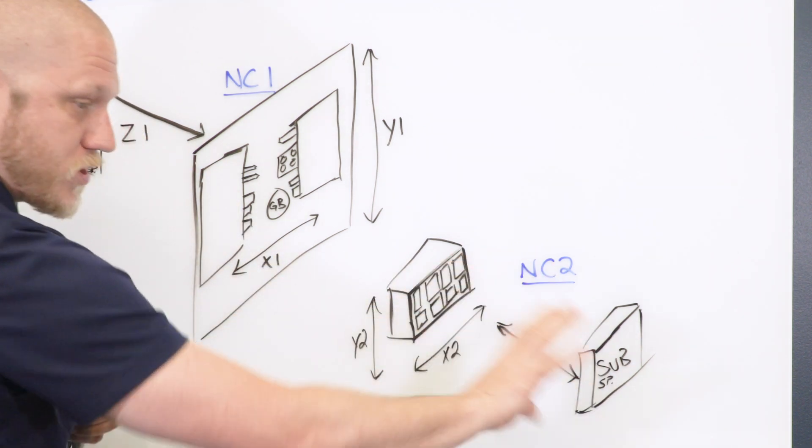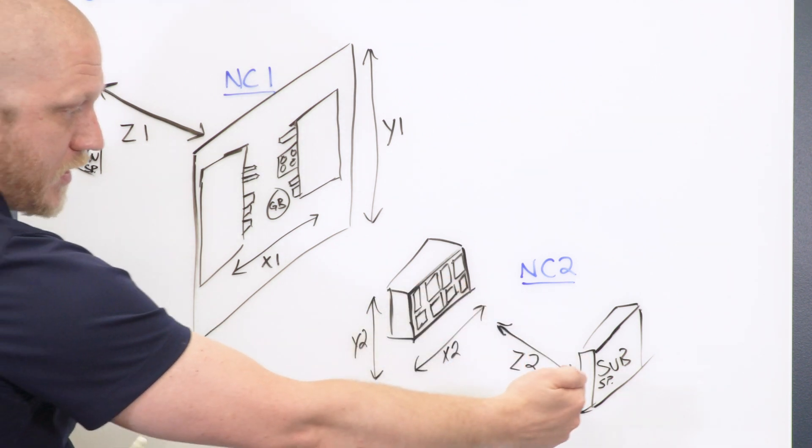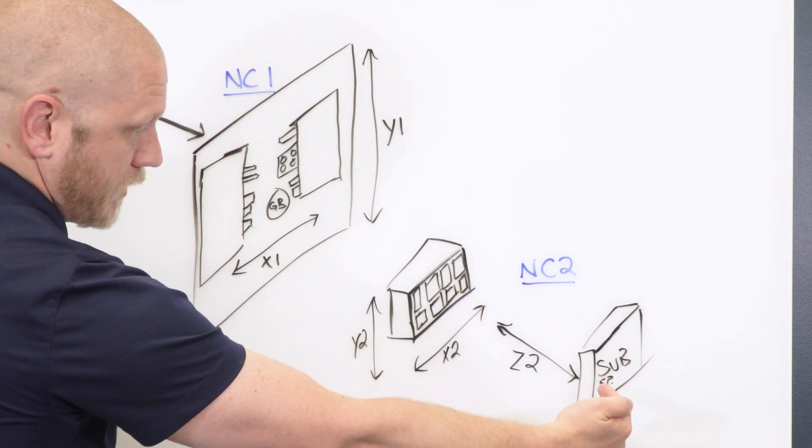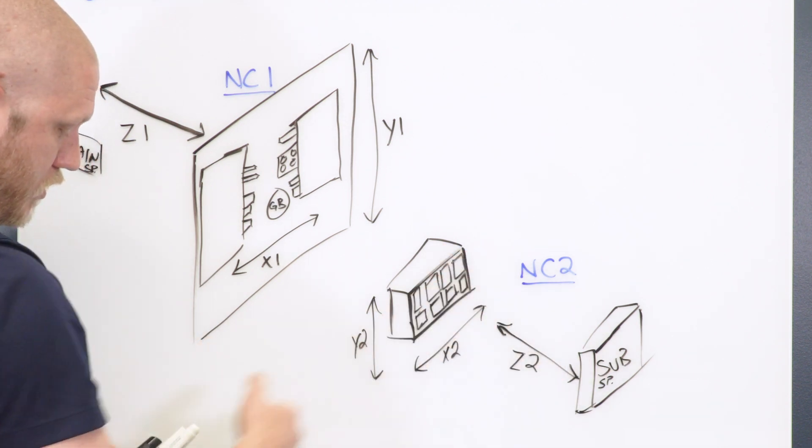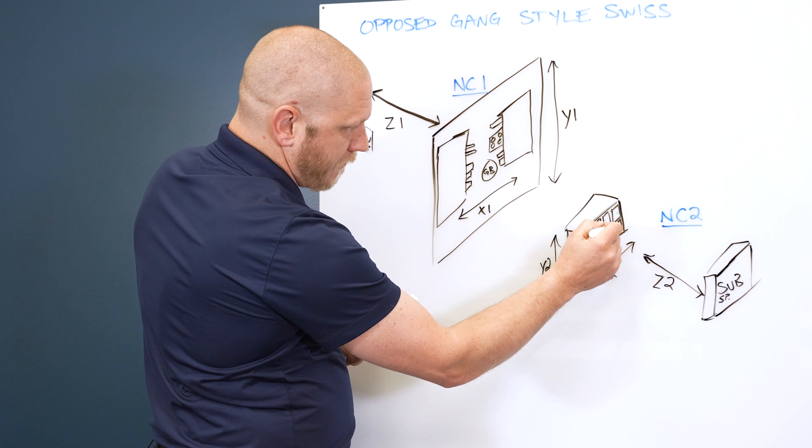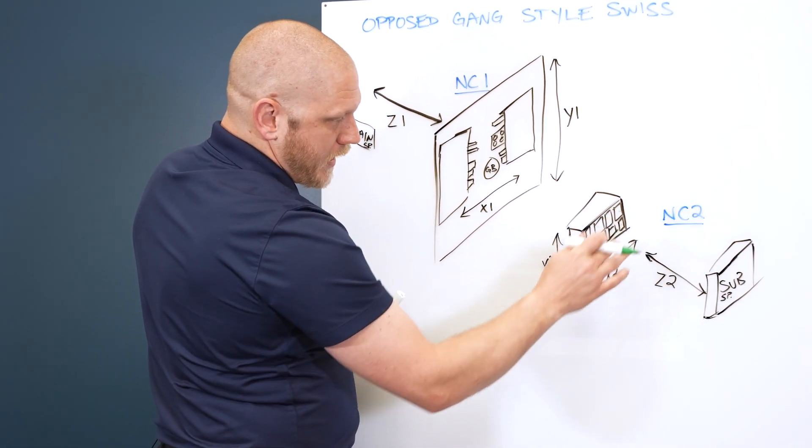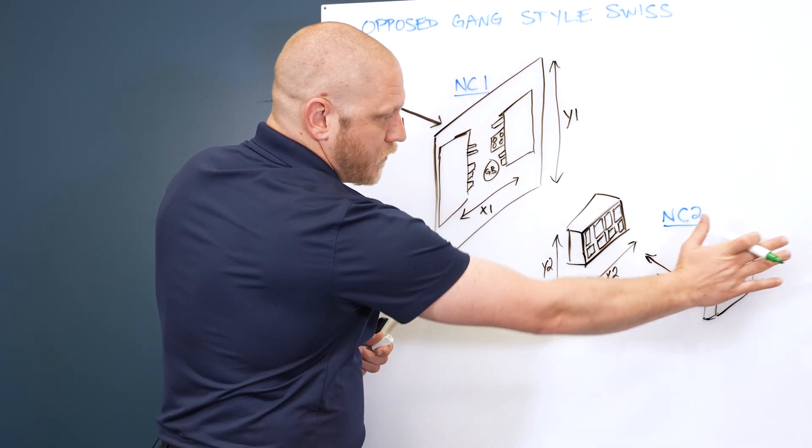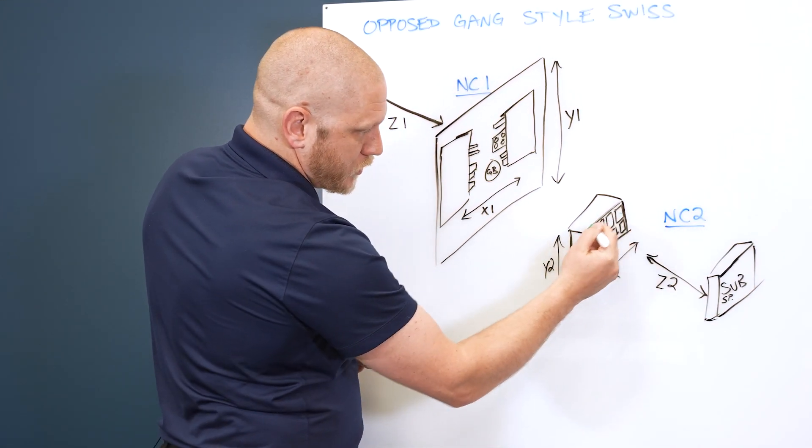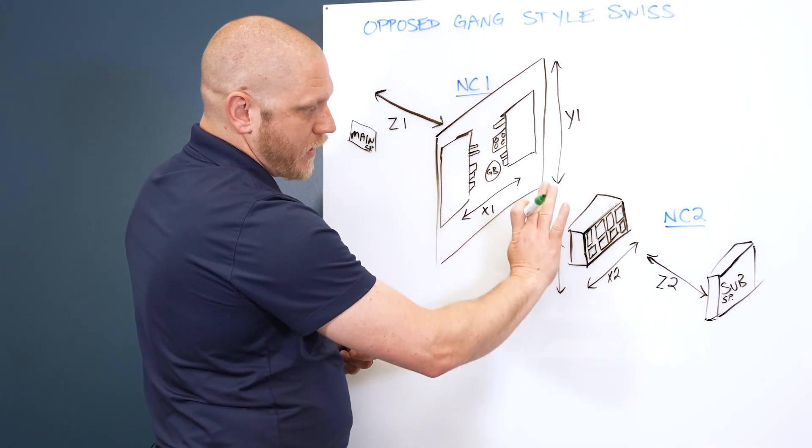On NC2, this would be your sub spindle side. Very similar, just going the opposite direction. Z2, sub spindle is going to be moving towards the tools. So your tools would actually be in here facing the sub spindle out. So Z2 would feed into the tools. X2 is the sub spindle moving horizontally from tool to tool. And Y2 is the block itself moving up and down.